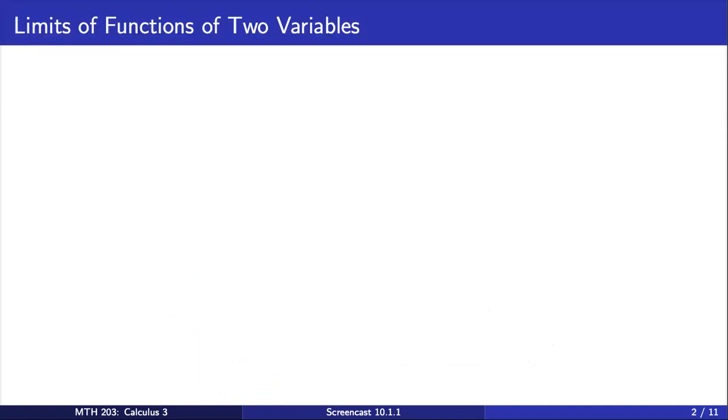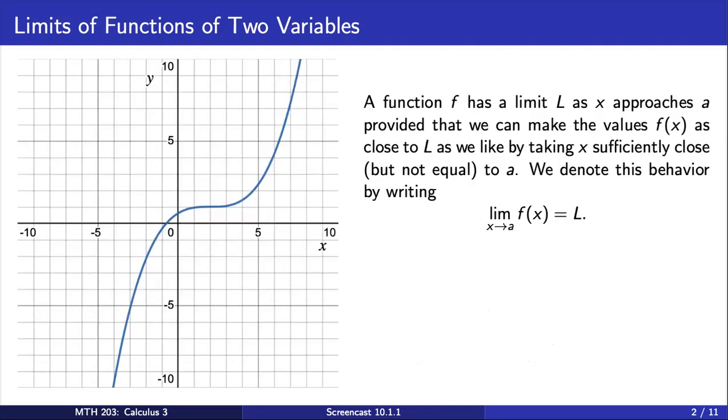Let's first review limits of a function of one variable. A function f has a limit L as x approaches the value a, provided that we can make the values of f(x) as close to L as we'd like by taking x sufficiently close but not equal to the value a. We denote this behavior by writing the limit of f(x) as x approaches a equals L.